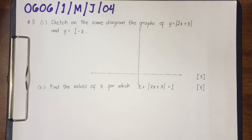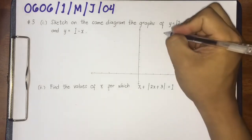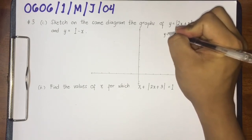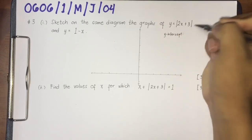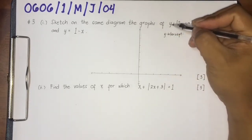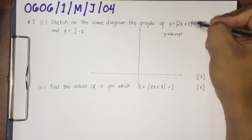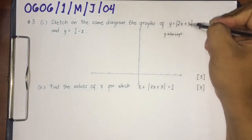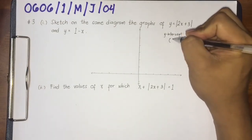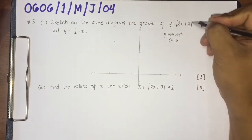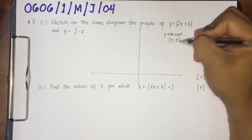In graphing a linear equation, there are a lot of methods, but I am going to use the x and y-intercept method. I am going to look first for the y-intercept. You've learned from your mathematics that y equals mx plus c, where c is the y-intercept. So the y-intercept can be written as (0, 3) because c is 3.